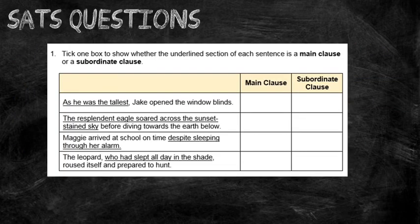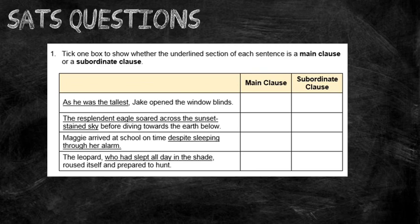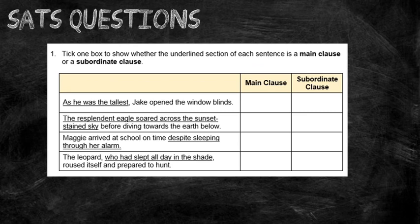Let's have a look at some SATs questions to do with main and subordinate clauses. This is one that's come up in the past, where they've given you sentences and asked you to identify whether the underlined part is the main clause or the subordinate clause. Sentence number one: 'As he was the tallest, Jake opened the window blinds.' The underlined bit is 'as he was the tallest.' The subordinating conjunction is 'as,' which means that is the subordinate clause — remove it and 'Jake opened the window blinds' still makes sense on its own.